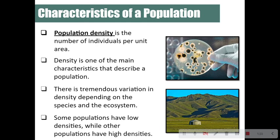Population density is the number of individuals per unit area, and it is one of the main characteristics that describes a population. There is tremendous variation in density depending on the species and the ecosystem — some populations have low densities while others have high densities. Looking at this picture, you'll see a petri dish with dark spots; those are bacteria colonies, and each spot actually contains thousands upon thousands of bacteria.